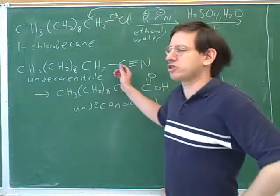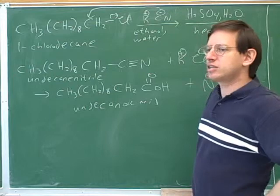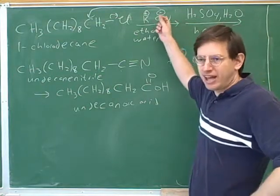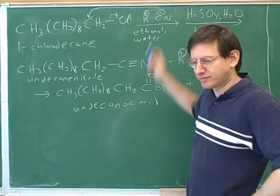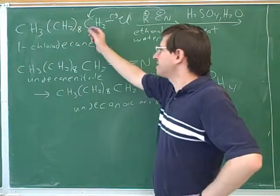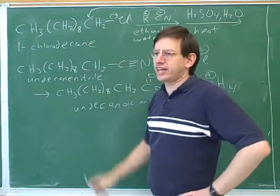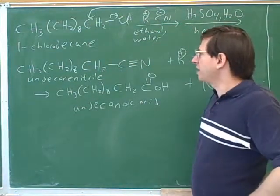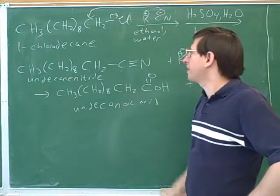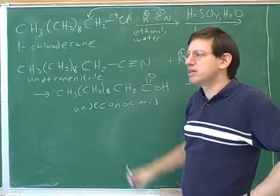But what do you do if you don't have a nitrile? Well that doesn't turn out to be a big problem because it's easy to make nitriles by using cyanide as a nucleophile. So you can imagine, here's this organic chemist, and he's got 1-chlorodecane. And the chemist said, well, I don't want 1-chlorodecane. I want to make this into a carboxylic acid.